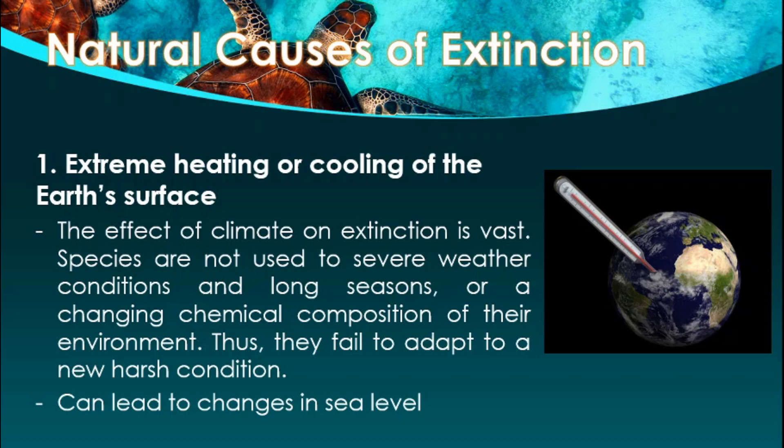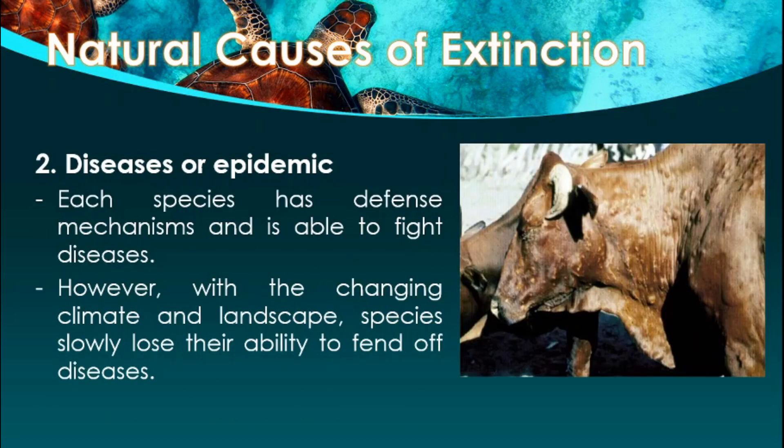The second natural cause of extinction is disease or epidemic. Each species has defense mechanisms and is able to fight diseases. However, with a changing climate and landscape, species slowly lose their ability to fend off diseases, eventually leading to the death of the species.